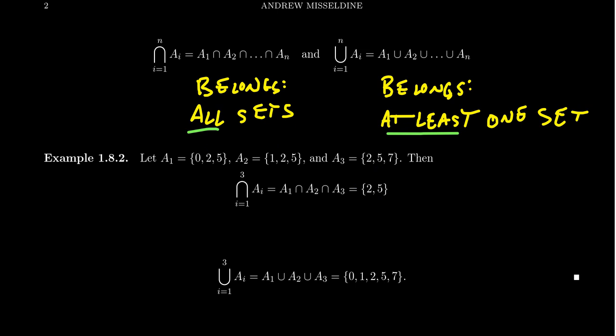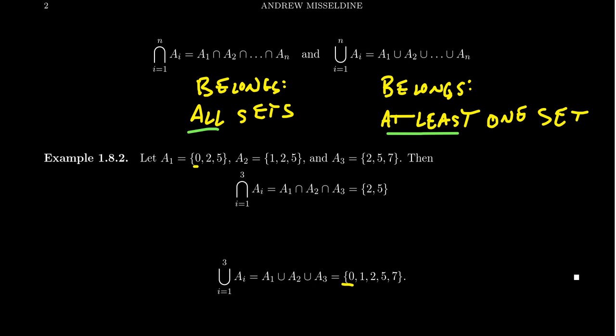What about the union? The union of A_i as i ranges from 1 to 3 is shorthand for A₁ ∪ A₂ ∪ A₃ — we're looking for all elements belonging to at least one of these sets. A₁ contributes 0, 2, and 5. A₂ contributes 1, while 2 and 5 we've already considered. A₃ contributes 7, while 2 and 5 are already there. So the union of these three sets is the five elements {0, 1, 2, 5, 7}.